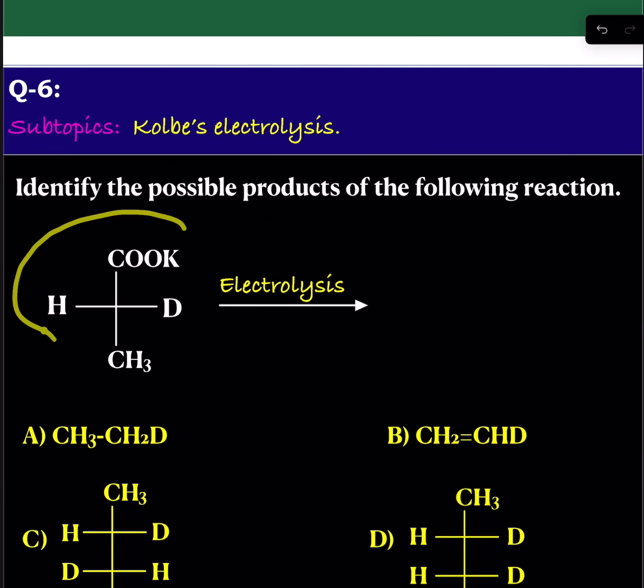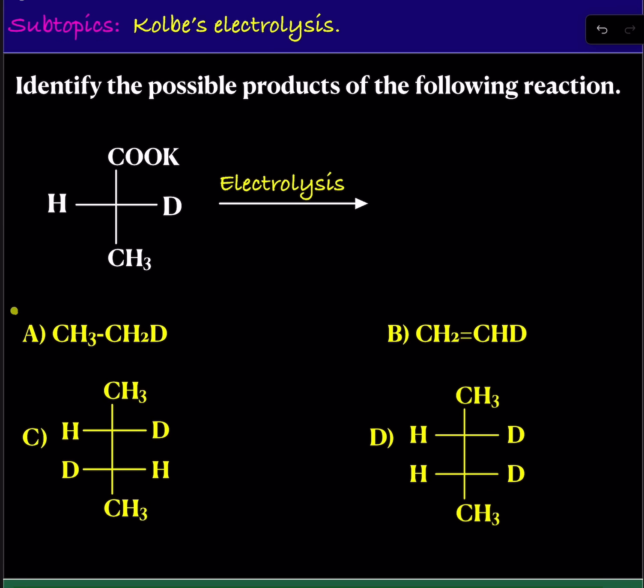And here, the potassium salt of a carboxylic acid is given. And of course, there is already one chiral center and its stereochemistry is fixed. It is subjected to electrolysis. Whether these products are possible or not, they are asking.